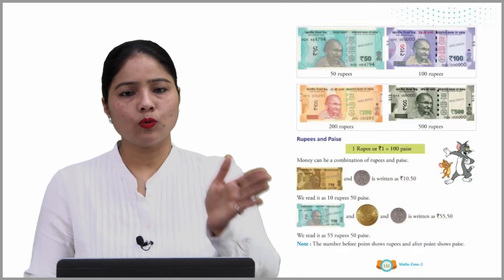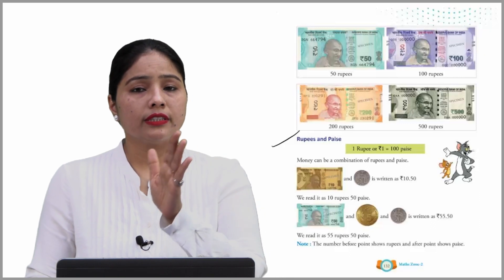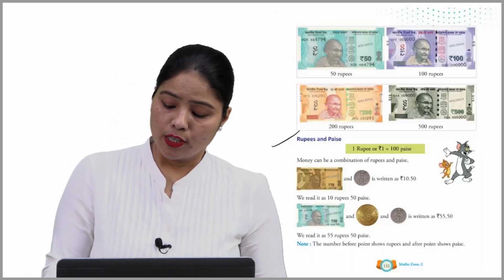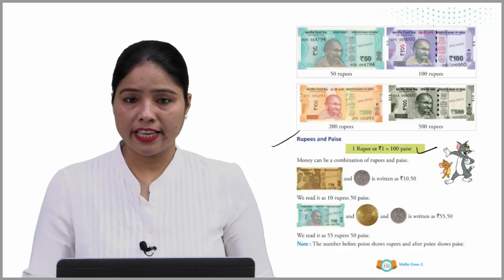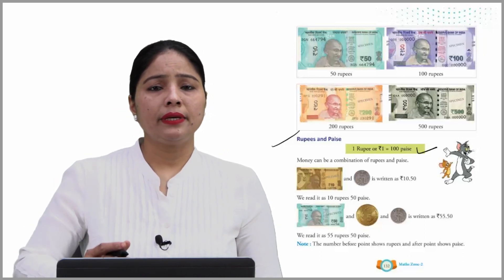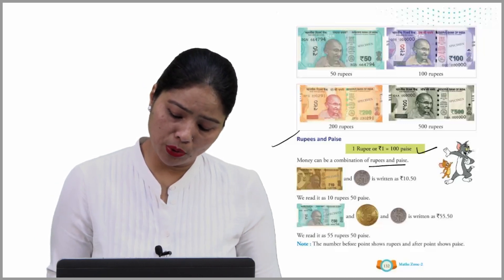Rupees and paise. One rupee is equal to hundred paise. So one rupee has hundred paise. This is very important, just revise it.